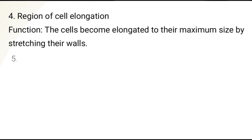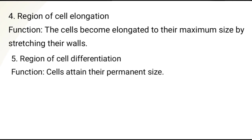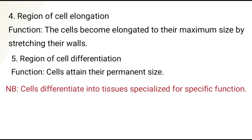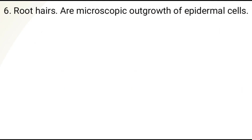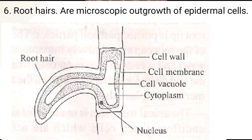Number five, zone of cell differentiation. Here the cells attain their permanent size and differentiate into tissues which are specialized for a specific function. Number six, root hairs — they are microscopic outgrowths of epidermal cells. This is the diagram of the root hair cell.